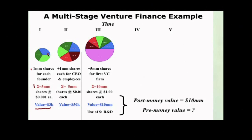A little bit of time goes by. They've reduced some risk and created some value. They want to bring in a CEO and also carve out part of the equity for stock options for early employees. Now, because they've reduced some risk and created some value, the startup is worth $50,000. We create another one million shares each for the CEO and for the early employees — an additional two million shares total, so now there are five million shares. With a total valuation of $50,000 and five million shares, instead of being worth a tenth of a penny, each share is now worth a penny.